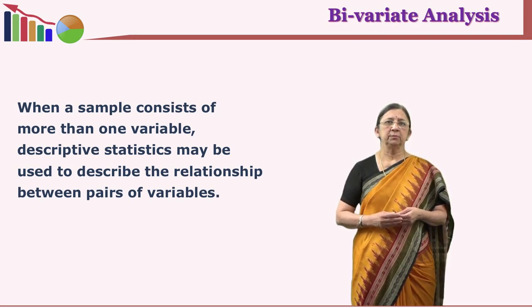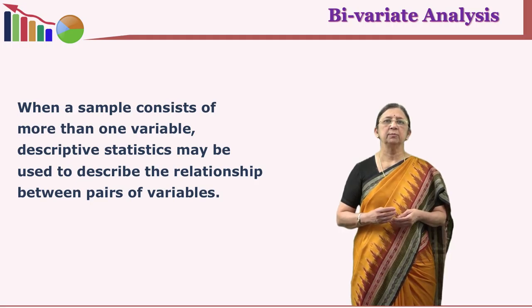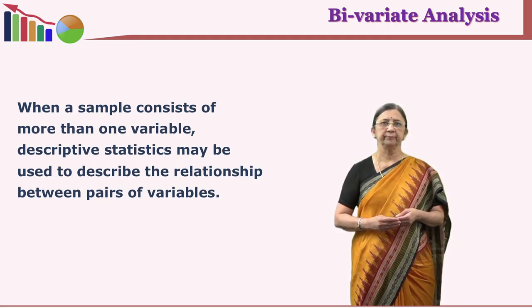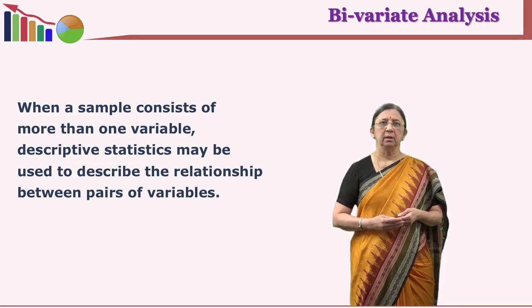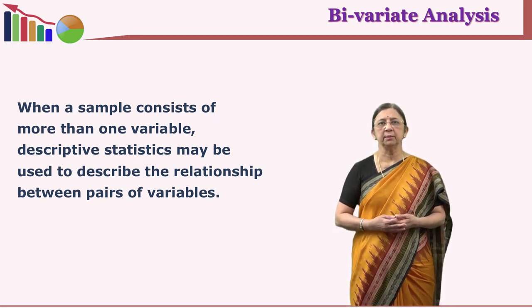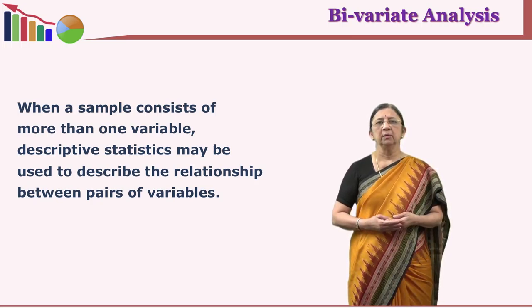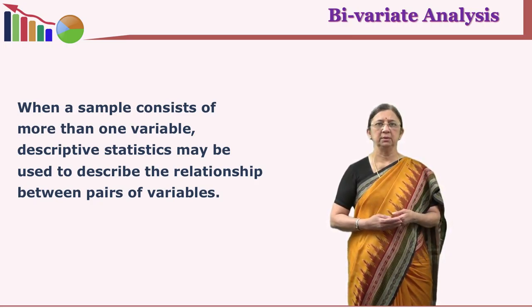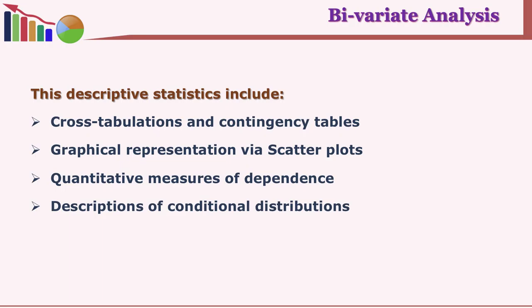When your distribution or sample consists of more than one variable, it is called bivariate. For bivariate description of your distribution, we can use a variety of measures: cross tabulation and contingency tables, graphical representation via scatter plots, quantitative measures of dependence, and description of conditional distributions.